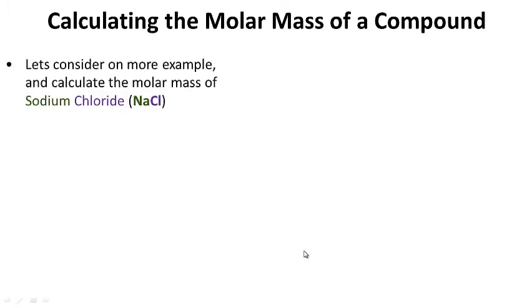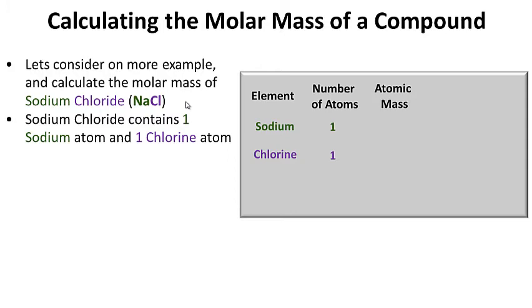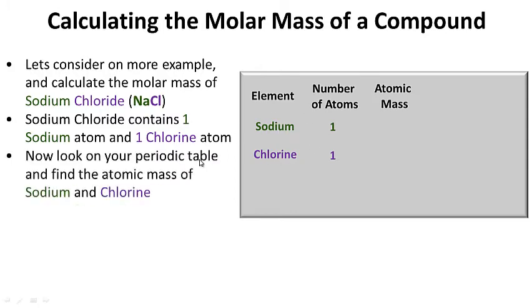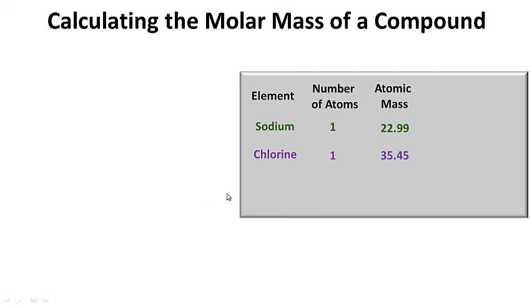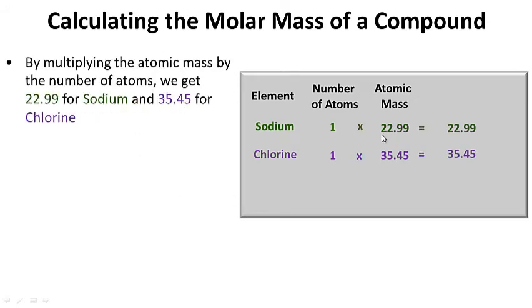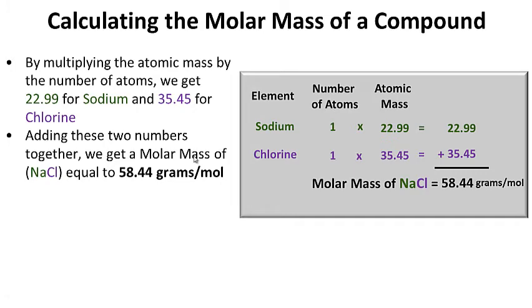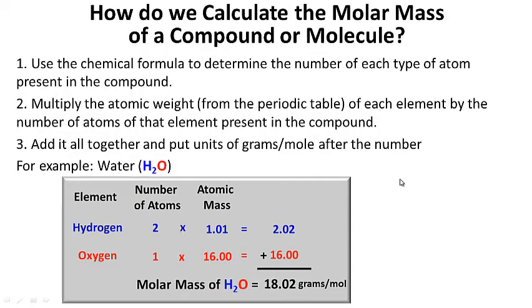Let's try one more example and calculate the molar mass of sodium chloride. Sodium chloride contains one sodium atom and one chlorine atom. According to our periodic table, sodium has an atomic mass of 22.99 and chlorine has an atomic mass of 35.45. Multiplying atomic mass by number of atoms: 1 times 22.99 is 22.99, and 1 times 35.45 is 35.45. Adding these together, we get a molar mass of sodium chloride equal to 58.44 grams per mole. Make sure you write down the example in your notes.